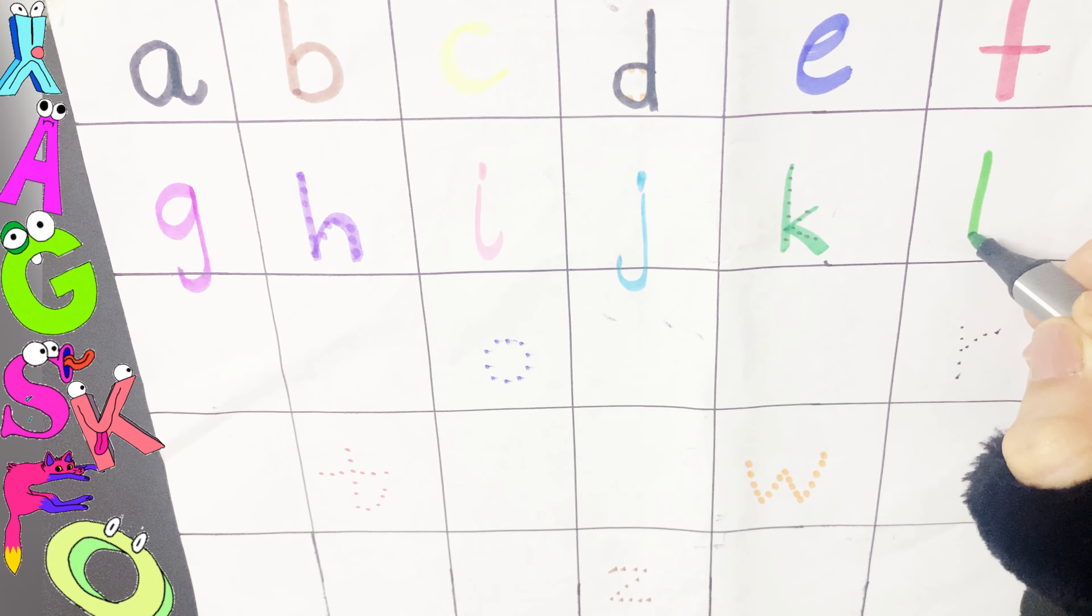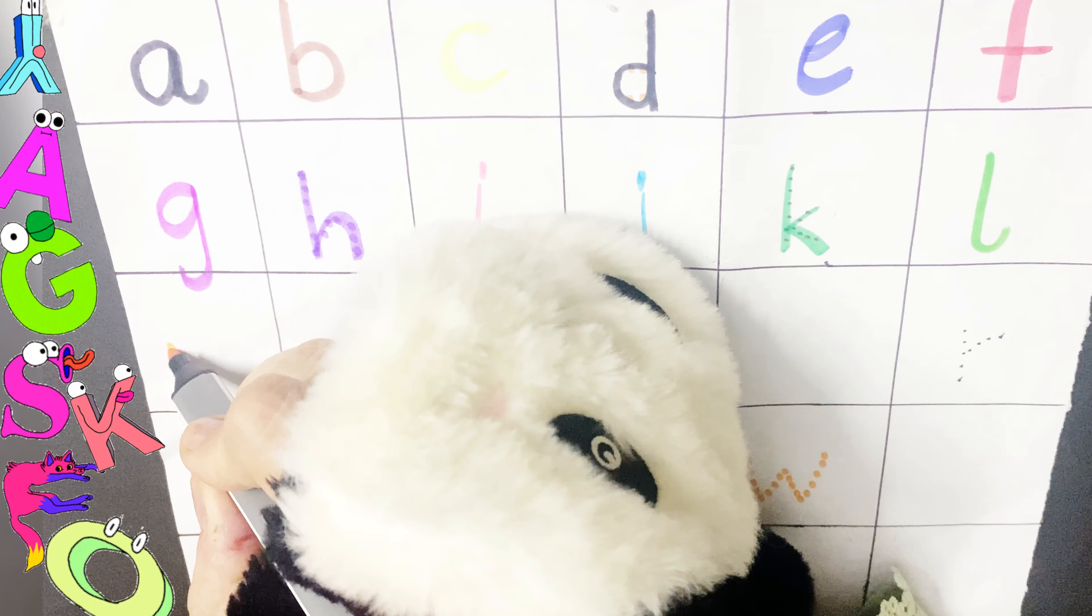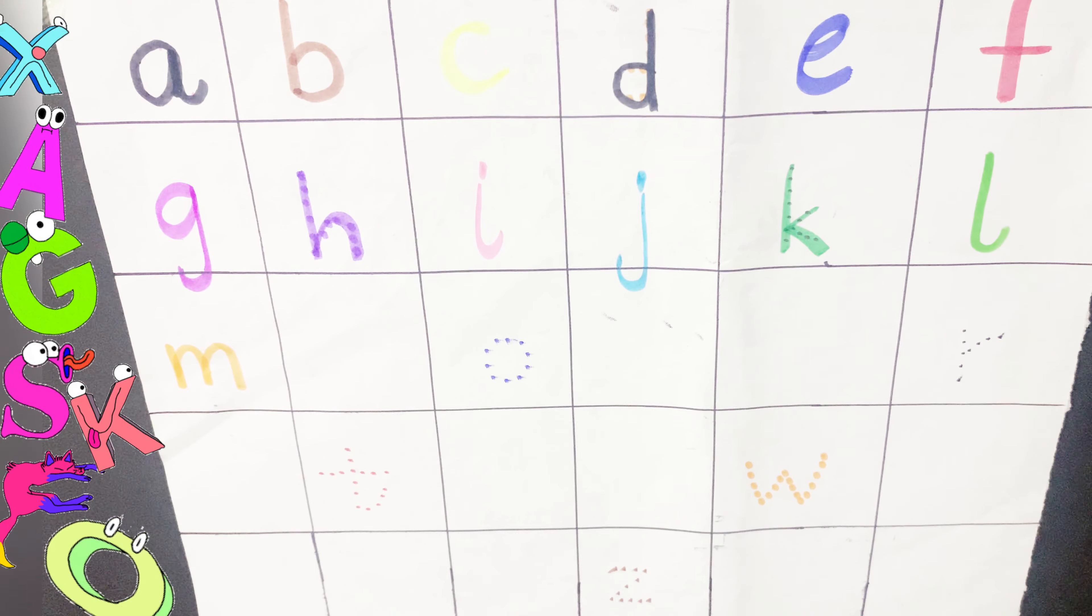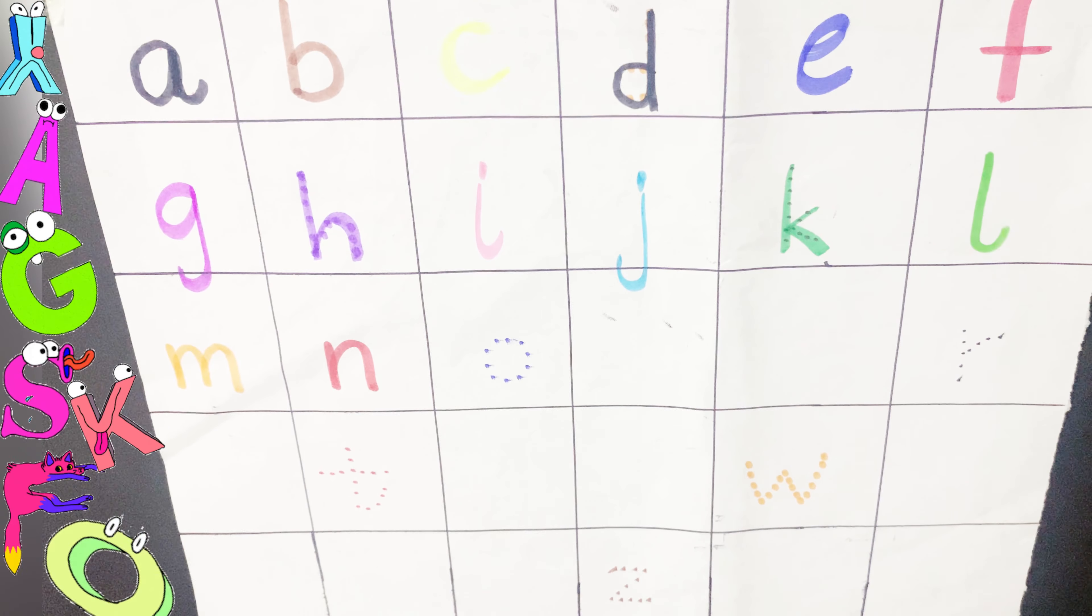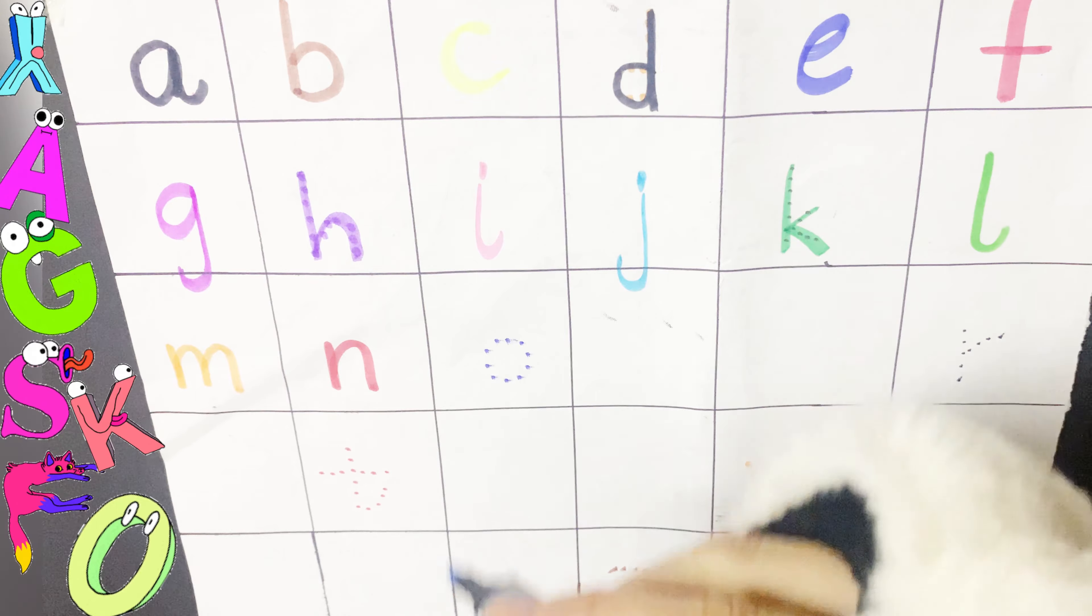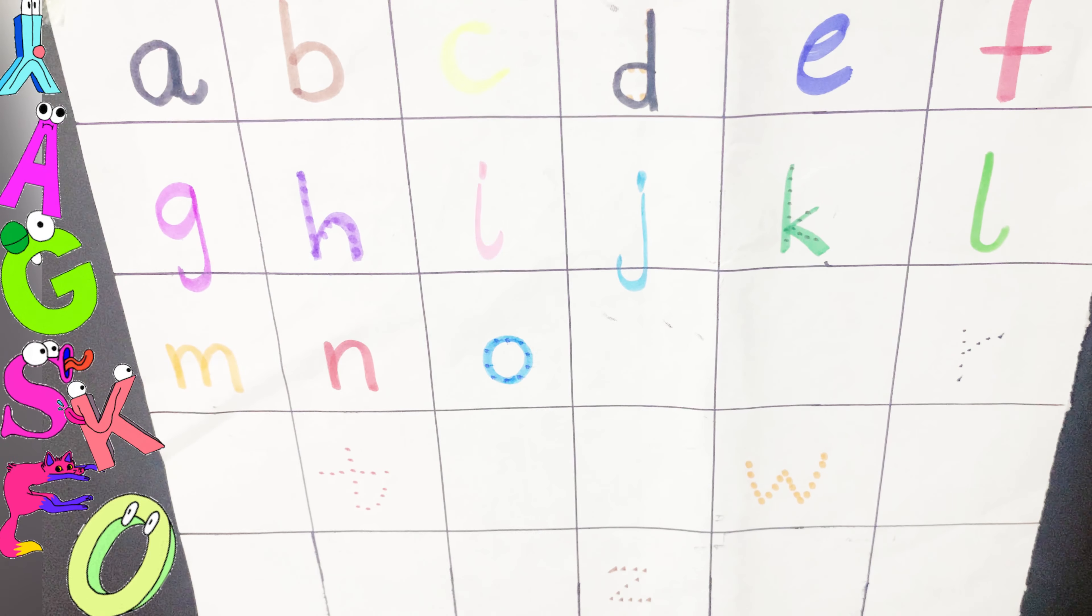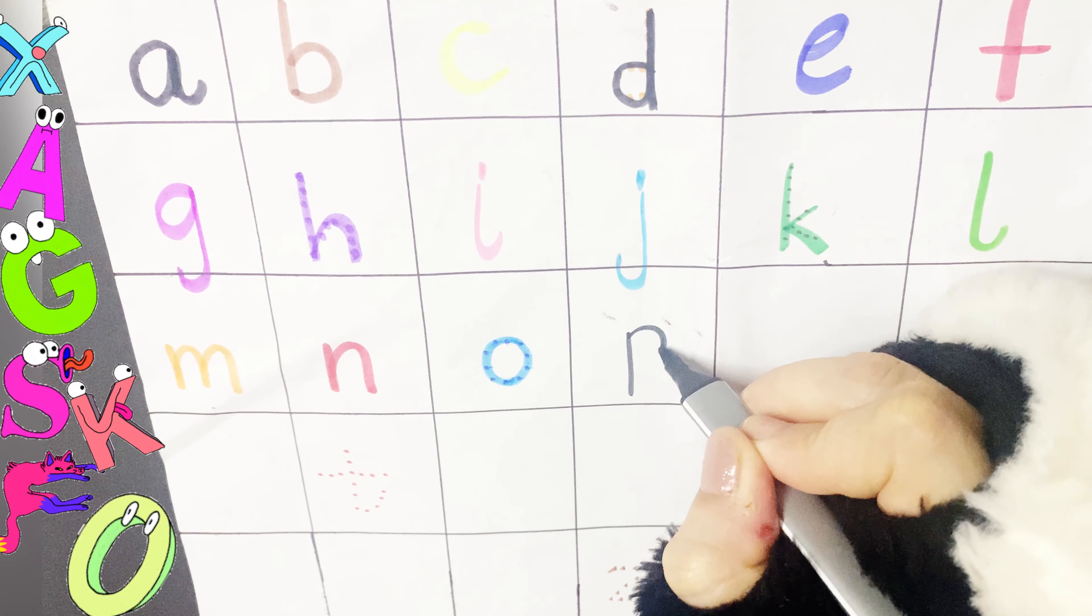L is for Lion. M is for Moon. N is for Nose. O is for Octopus. P is for Panda.